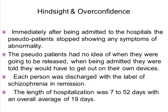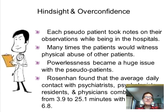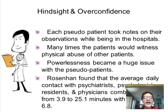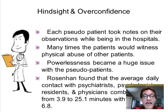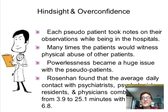On average it took between 7 and 52 days to be discharged, with an average of 19 days. The patients were instructed to take notes while in the hospital — documenting how they were treated, how other patients were treated, and relationships among patients. There was considerable physical abuse of patients and a pervasive sense of powerlessness, even among the pseudo-patients who knew they weren't mentally ill.